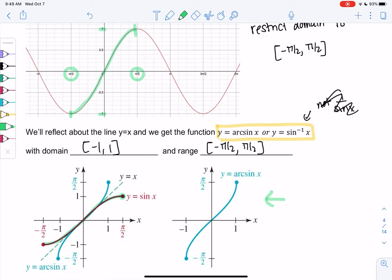You'll notice that the domain and range switch. The original function went from negative one to one, so now my domain is negative one to one. The original function had a domain of negative pi over two to pi over two, so now that's my range. You'll see they just switch.